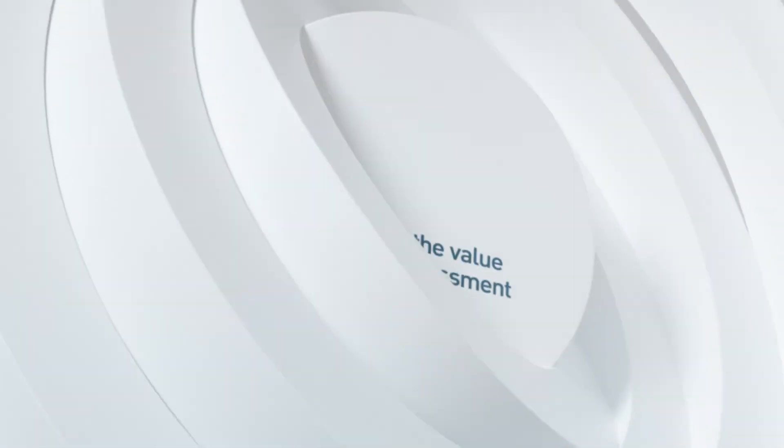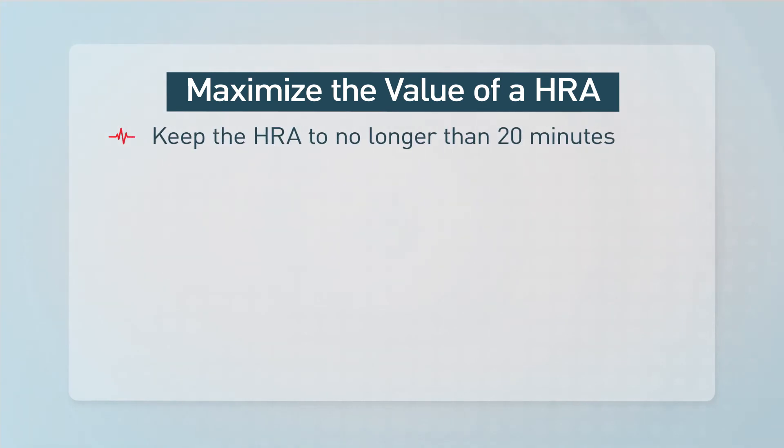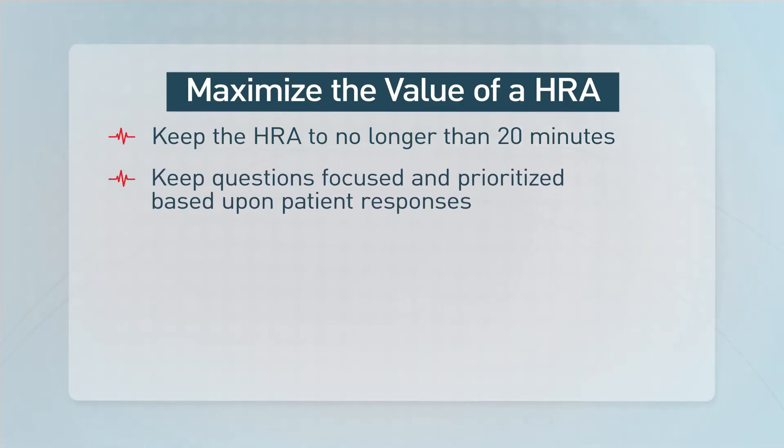So how can you maximize the value of a health risk assessment and get the most out of it to better serve your patient population? One tip is to keep the health risk assessment to no longer than 20 minutes — this will help to get the highest level of participation from your patients. Keep questions focused and prioritized depending on patient responses, and ensure questions are evidence-based as well as clear and concise. This will make sure you gather all the necessary information from patients while staying efficient and still providing this valuable care service.